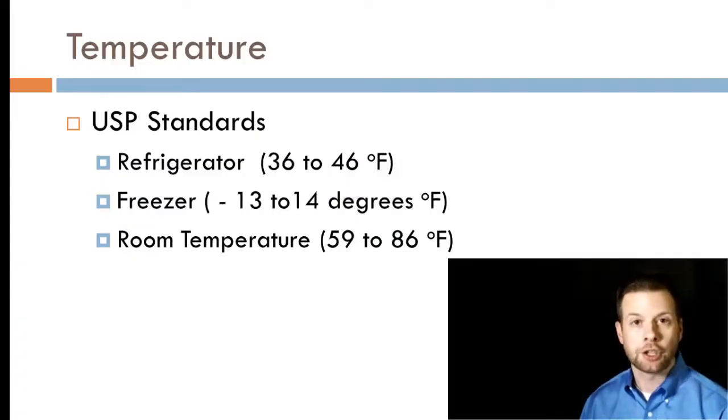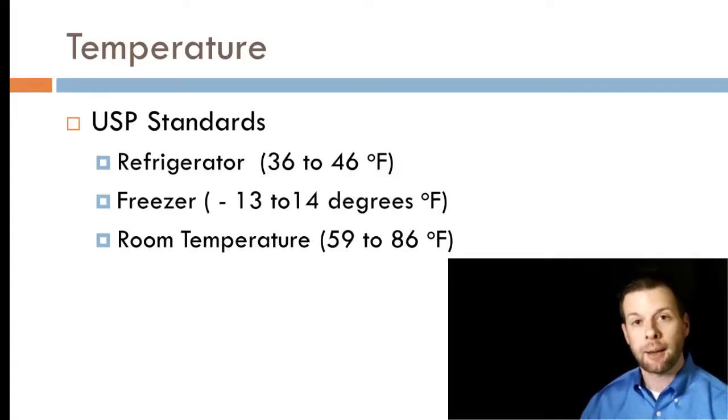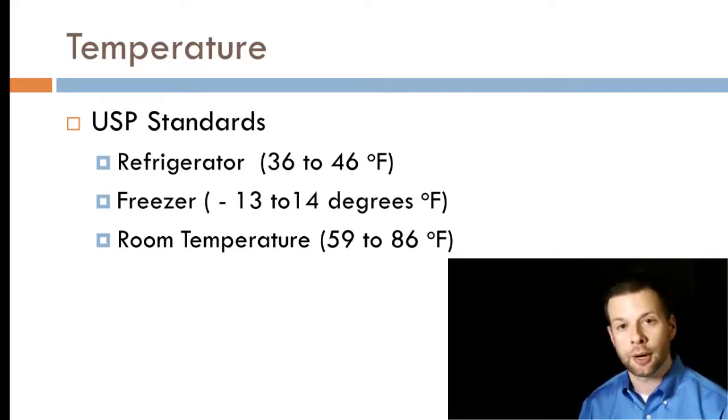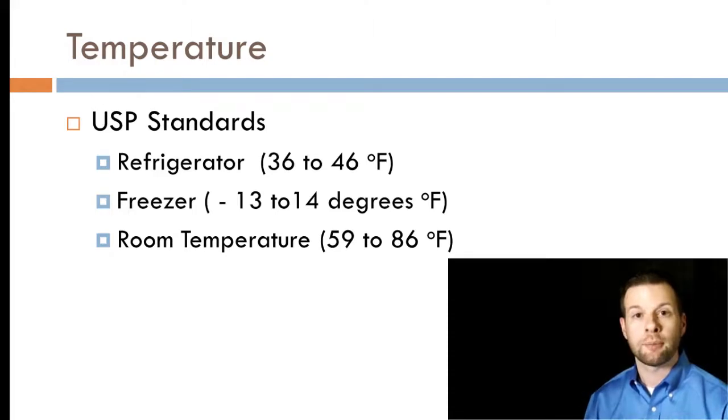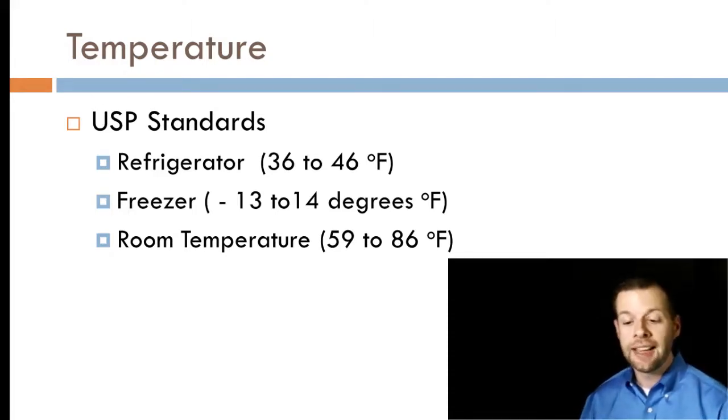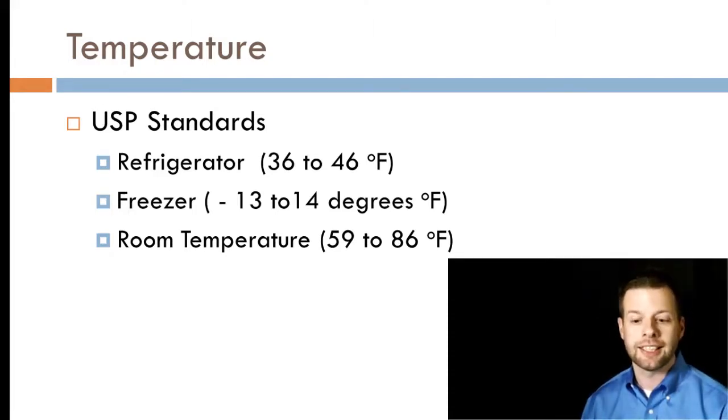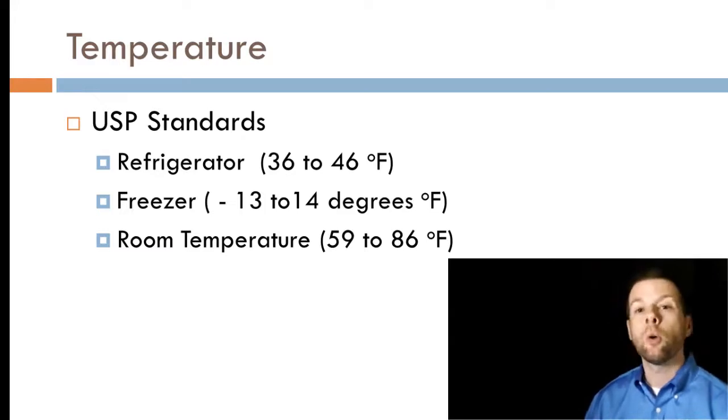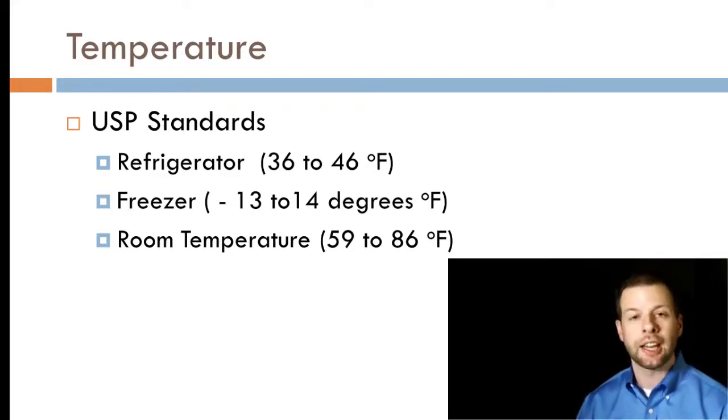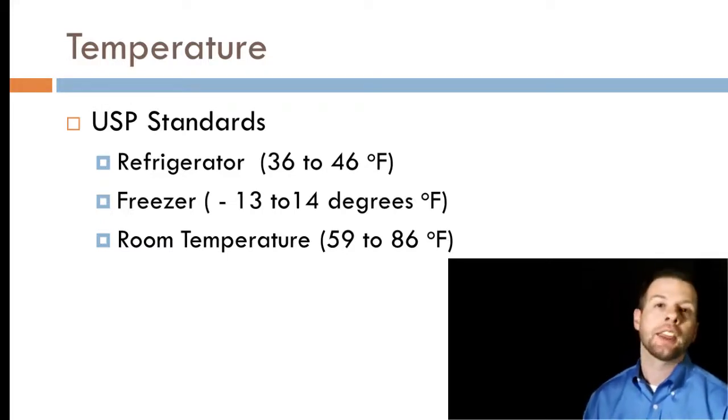Storage temperatures: for refrigeration, I need my insulin or any product stored in refrigeration to be kept at 36 to 46 degrees Fahrenheit. In a freezer, I need it between negative 13 and 14 degrees Fahrenheit. Room temperature I expect to be kept at 59 to 86 degrees Fahrenheit.